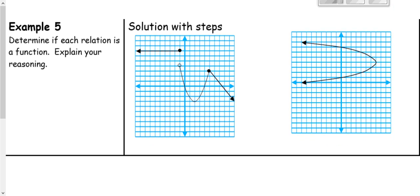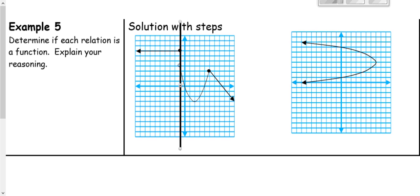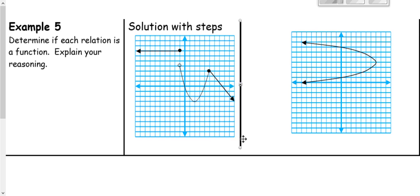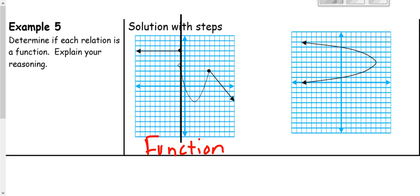Let's try one more. I get my vertical line and move it across the graph. In this section, just one output for each input. How about right here? Yes, this is a function — there was no point on the graph where I had more than one output for any input. Even right here, that's not really a point. But over here, even without dots, I have two outputs for that input — so this is not a function.